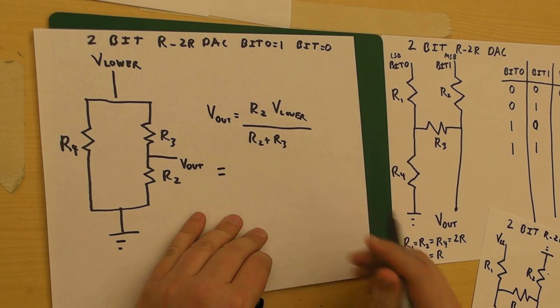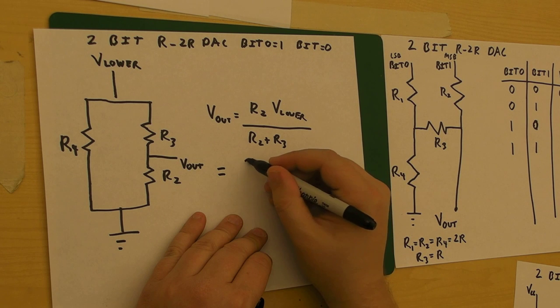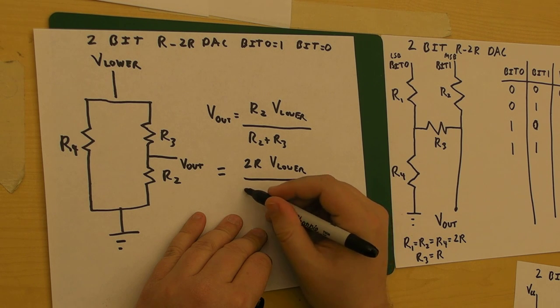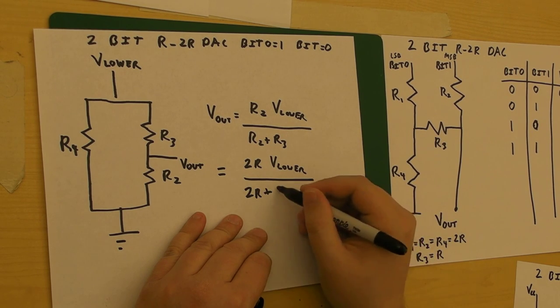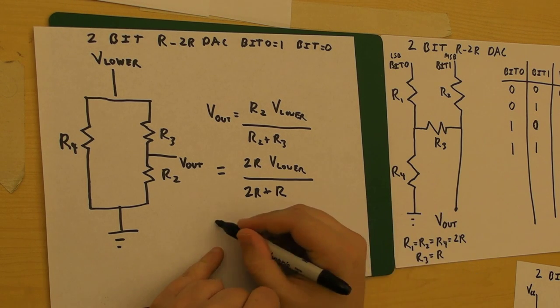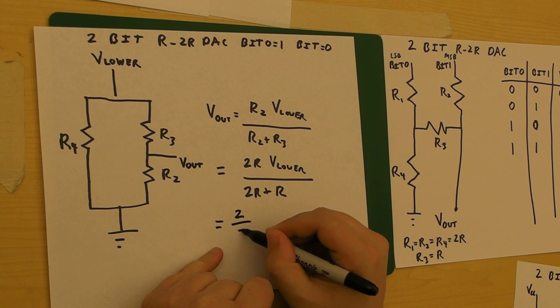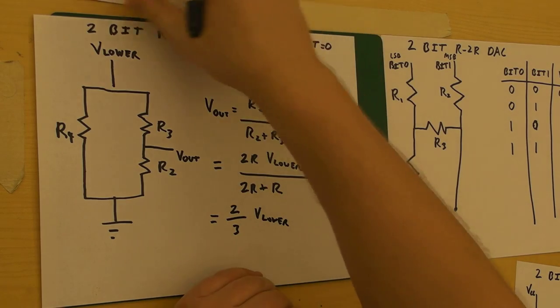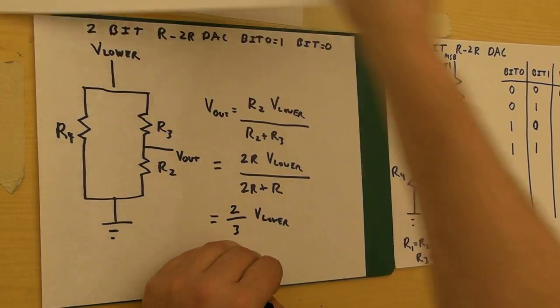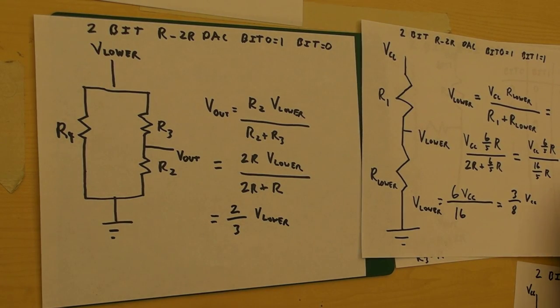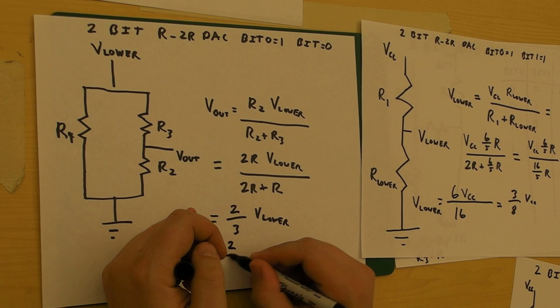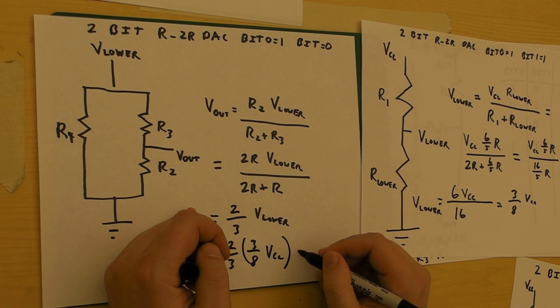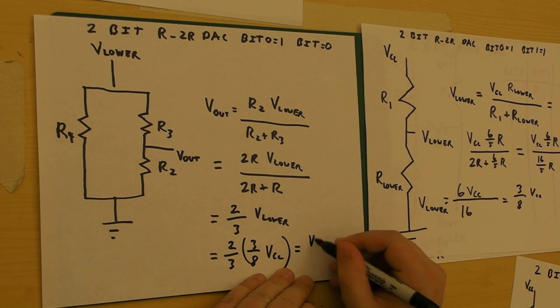And that, looking at our table again, R2 is 2R times V lower over 2R, R3 is equal to R. So in other words, we get 2 thirds V lower. Well, we know that V lower is equal to 3 eighths VCC. So substituting in here, we get 2 thirds times 3 eighths VCC. Or in other words, we get VCC over 4.